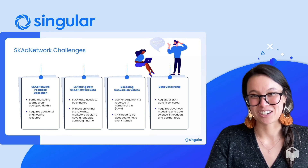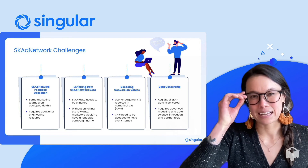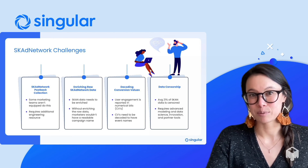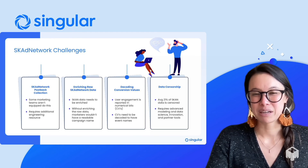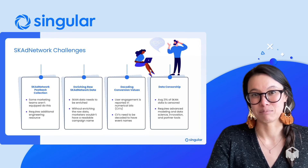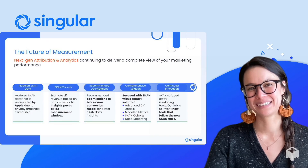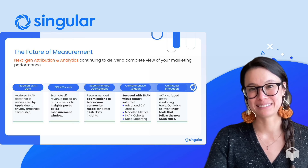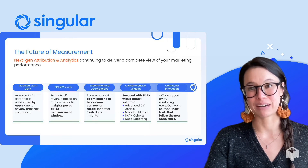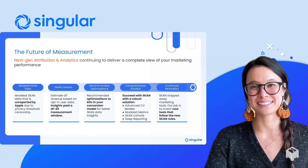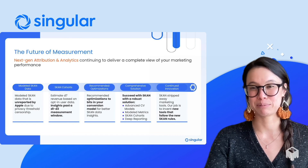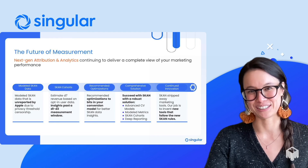That's a lot of data to be missing in order to continue to optimize, and this isn't even an exhaustive list. SKAdNetwork has been a defining moment for privacy, which is fantastic, but it's also left marketers with the challenge of overcoming these massive blockers. And that's where MMPs come in. As an unbiased third-party arbiter of attribution data, solutions like Singular's next-gen attribution and analytics are perfectly positioned to help marketers tackle these challenges.